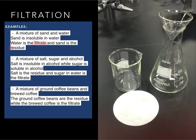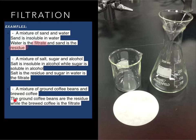We have two key terms: filtrate and residue. We can also use filtration for a mixture of salt, sugar, and alcohol. Salt is insoluble in alcohol while sugar is soluble, so salt will be the residue and the sugar dissolved in alcohol will be the filtrate. Another example: ground coffee beans are the residue, while brewed coffee is the filtrate because its particles are very small and can pass through the pores of the filter paper into the conical flask.